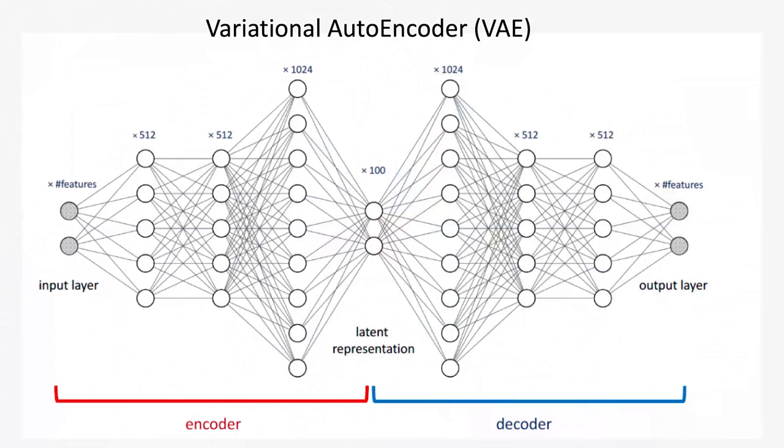One of the approaches that we have been looking at is something called Variational Autoencoder or VAE for short. VAE is an unsupervised deep learning technique that doesn't require ground truth data for training. What it does is it tries to learn the distribution of the dominant normal data. And based on that, you can get a sense of what is normal.